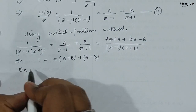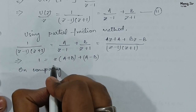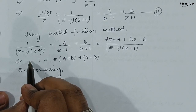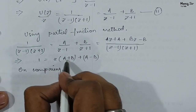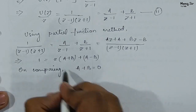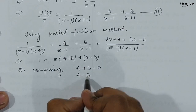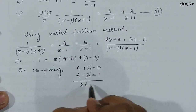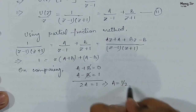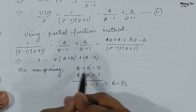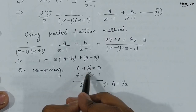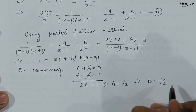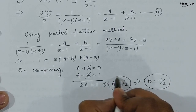On comparing the coefficients: coefficient of Z gives A + B = 0, and the constant term gives A − B = 1. Adding these two equations: 2A = 1, so A = 1/2. From A + B = 0, if A = 1/2 then B = −1/2. So we have A = 1/2 and B = −1/2.